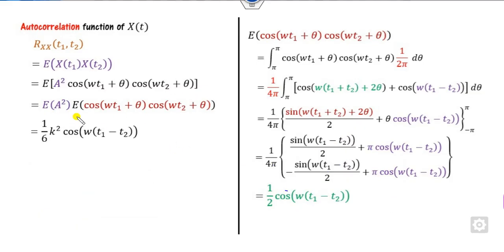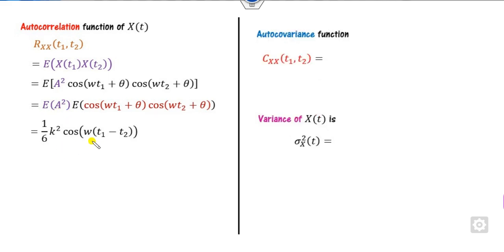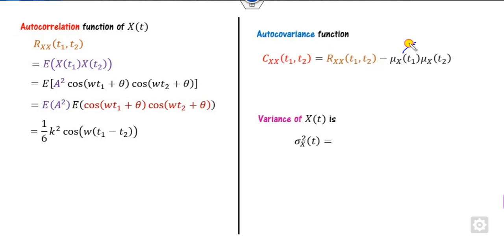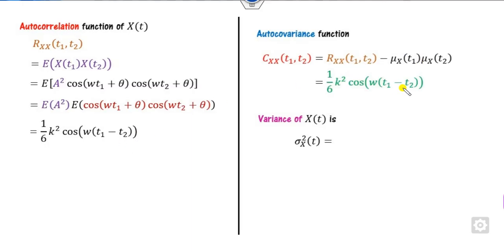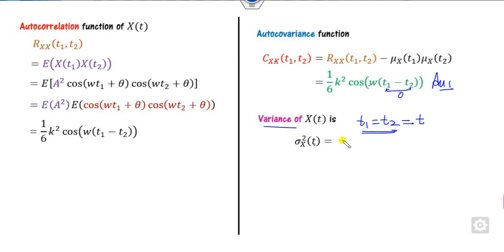How do you find the covariance? The covariance C_x = R_x minus the product of the means. We already calculated that the mean values are 0, so the product of means is 0. Therefore C_x = R_x = (k²/3)·cos(w(t1−t2)). To find the variance from the covariance, set t1 = t2 = t. Then cos(0) = 1, and the variance equals k²/3. Wait — substituting gives k²/6 as the required variance.